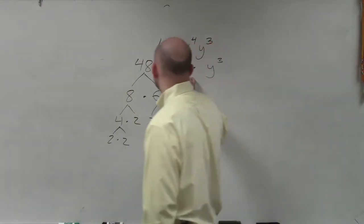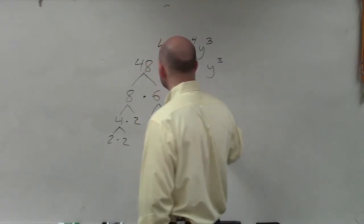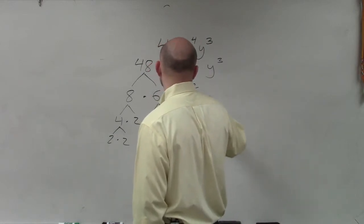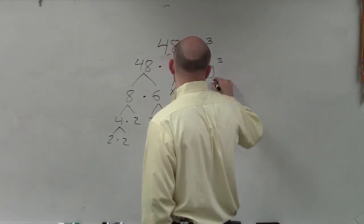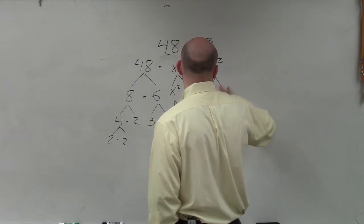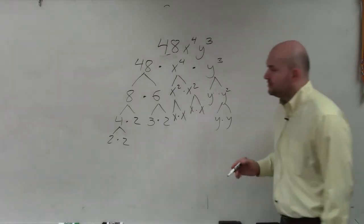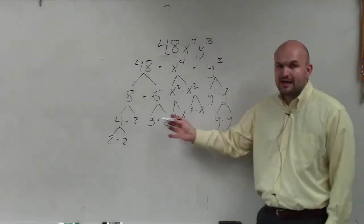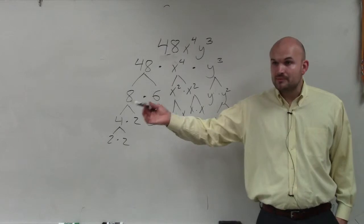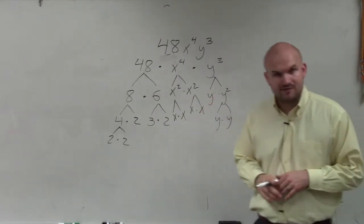x to the 4th I can break down into x squared times x squared, and x squared I can break down into x times x, x times x. And y cubed I can break down into y times y squared, and then y times y. You guys see how the numbers I've ended up with I can't factor any further — those are prime numbers. So now what we're going to do is write our product as a prime factorization.